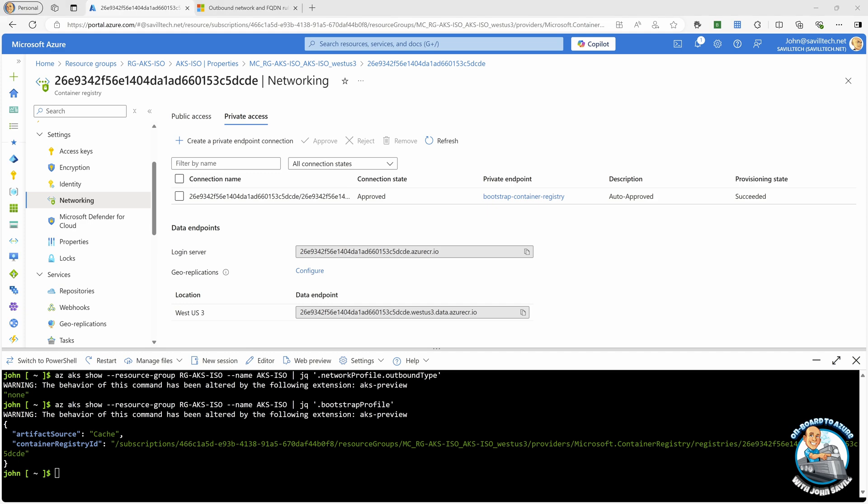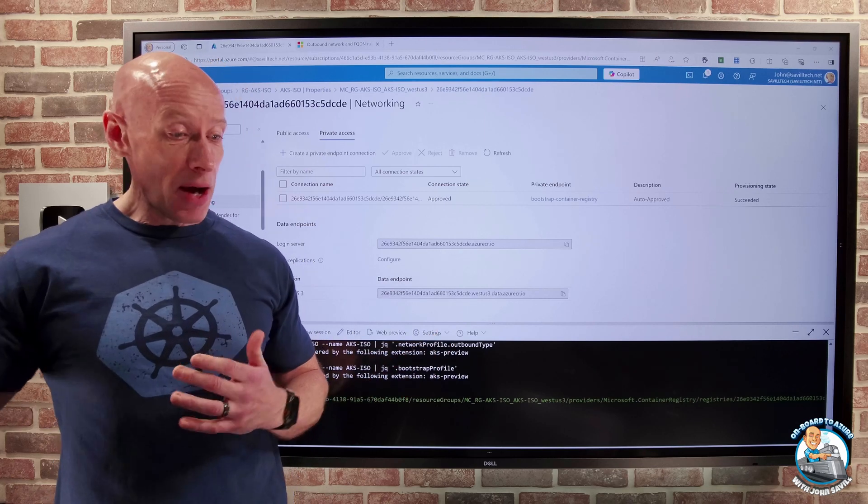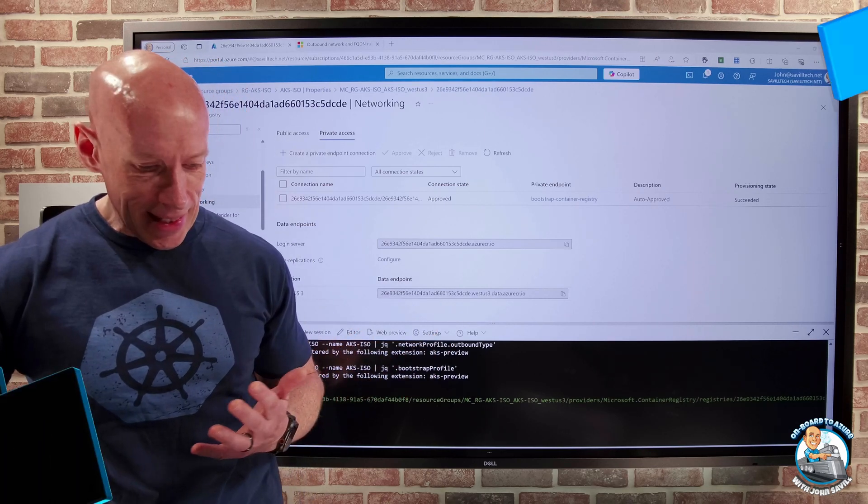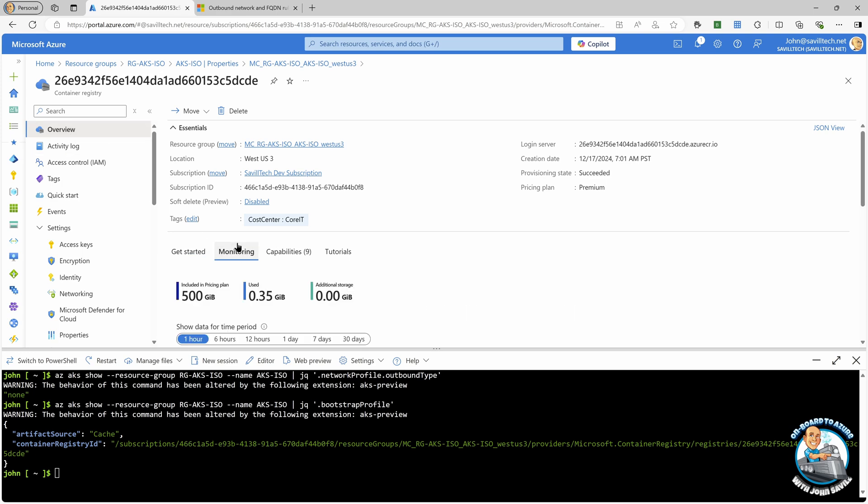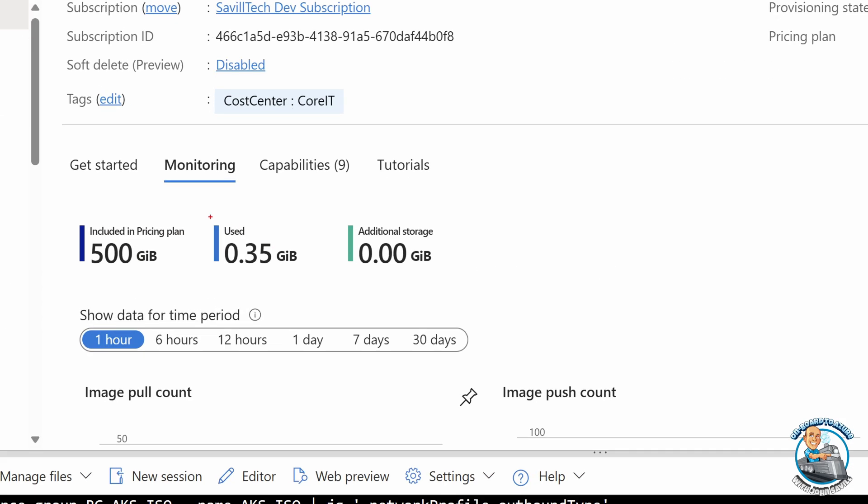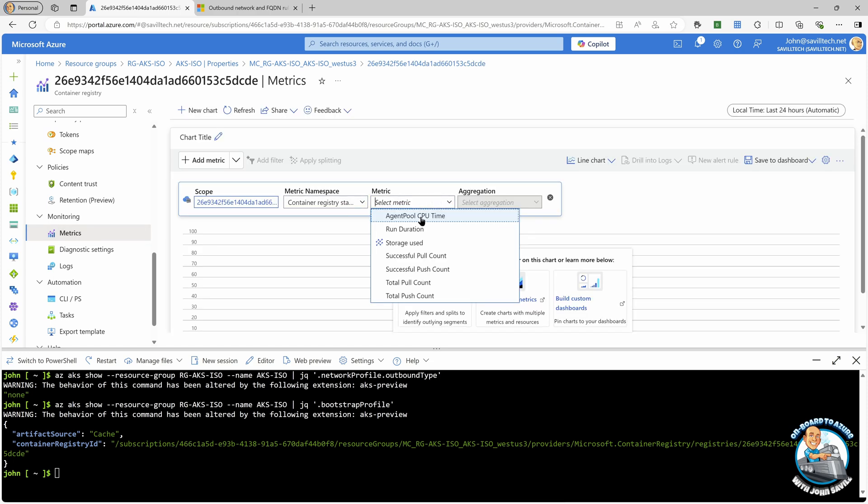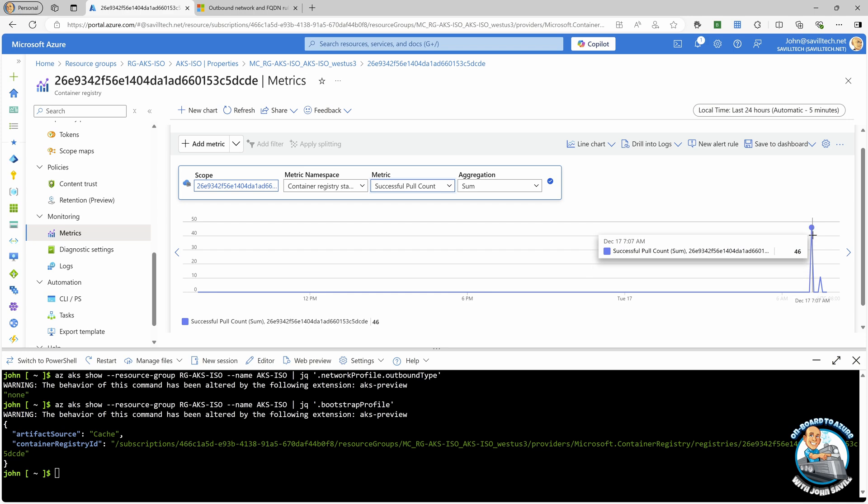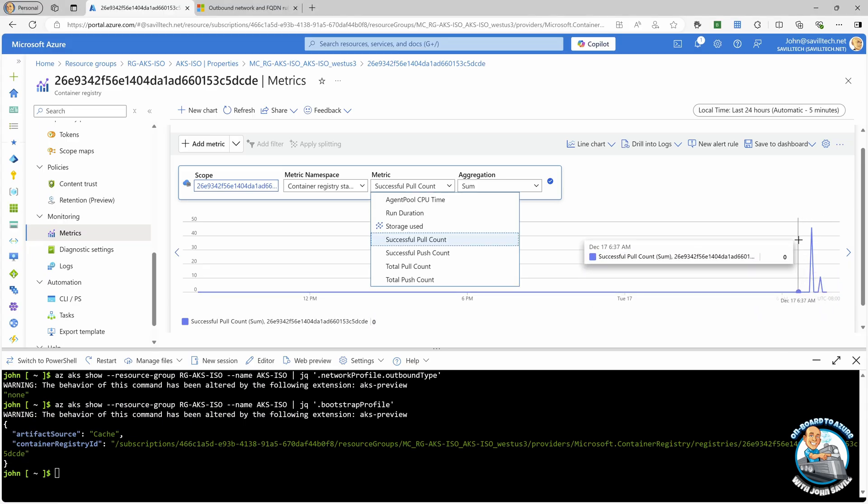Now, one of the things that might be interesting is what actually is in there. So if we actually go and look, one of the things I can do, firstly, if I just look at the overview and my monitoring, I can see right now it's used 350 megabytes. So obviously, I can see it's pulled some things there. If I go and look at my metrics, and if we look at successful pull count, we can see it's done a few bits and pieces here. But I can see there was 46 there and there's 10 there. So it's pulled a number of different images through.